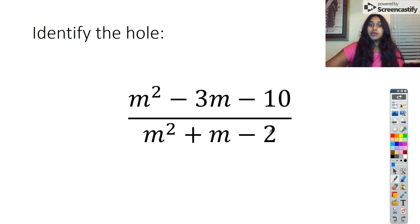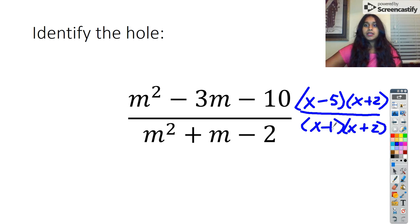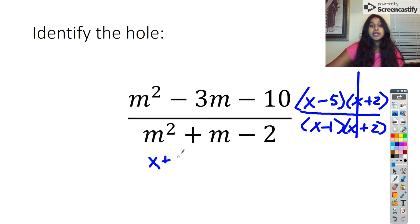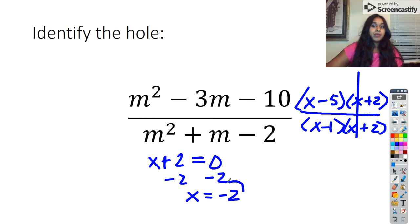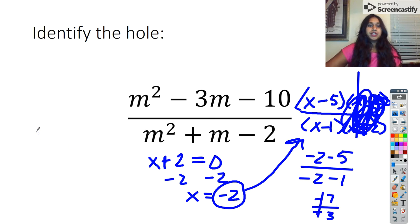The next question asks for a hole. We factor this as X minus five times X plus two, all over X minus one. For a hole, we look for what we can cancel. We can cancel X plus two, so I set X plus two equal to zero, giving X equals negative two. To find the Y value, I plug negative two into what wasn't canceled: negative two minus five over negative two minus one equals negative seven over negative three, which is positive seven thirds. So I have a hole at negative two comma seven thirds.